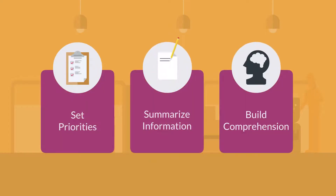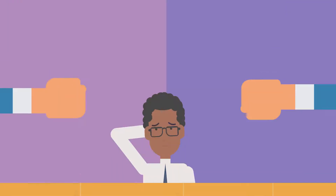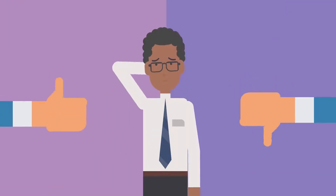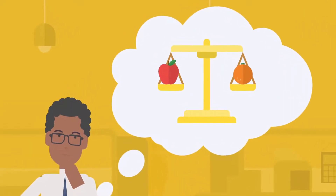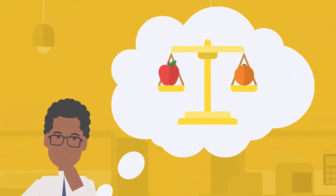Venn diagrams are useful for pre-writing. They can help to set priorities, summarize information, and build comprehension. Unlike a pro-con list, the diagram helps students see commonalities, which is another important aspect when writing an argument or persuasive essay.